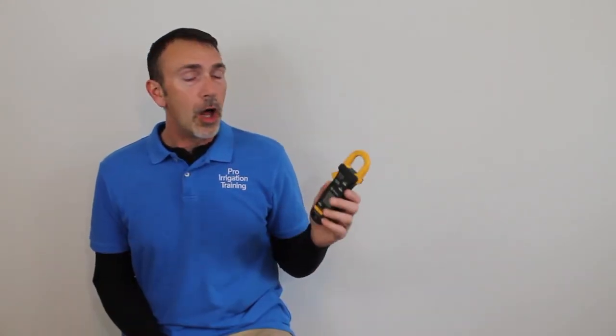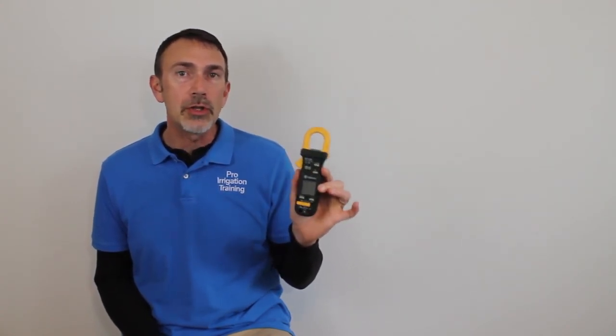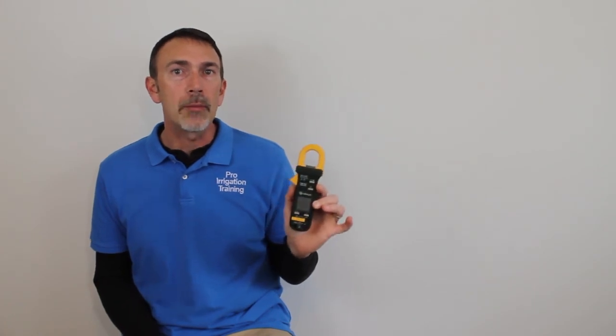Some of these good meters will also have a setting that'll allow you to measure the inrush amperage, so you can have this thing connected, turn the pump or appliance on or whatever you're trying to measure, and it will read the peak amperage, and consider that the inrush amperage, and also give you the operating amperage as well.